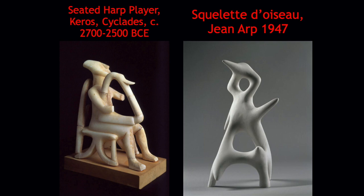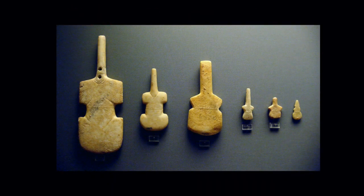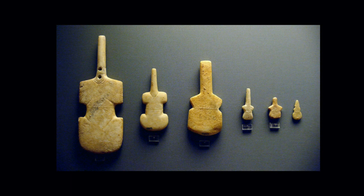Interest in these minimalistic figures peaked in the early to mid 20th century because they looked like works from modern sculptors like Jean Arp and Brancusi. There is a quality of purity, minimalism, and movement that really appealed to artists of that time. If the musicians are the most coveted and famous, the most common type of schematic representation of the human body in early Cycladic art were figurines that look like violins to us. They are actually squatting women — we know this because several examples feature an incised pubic triangle and, less frequently, modeled breasts.